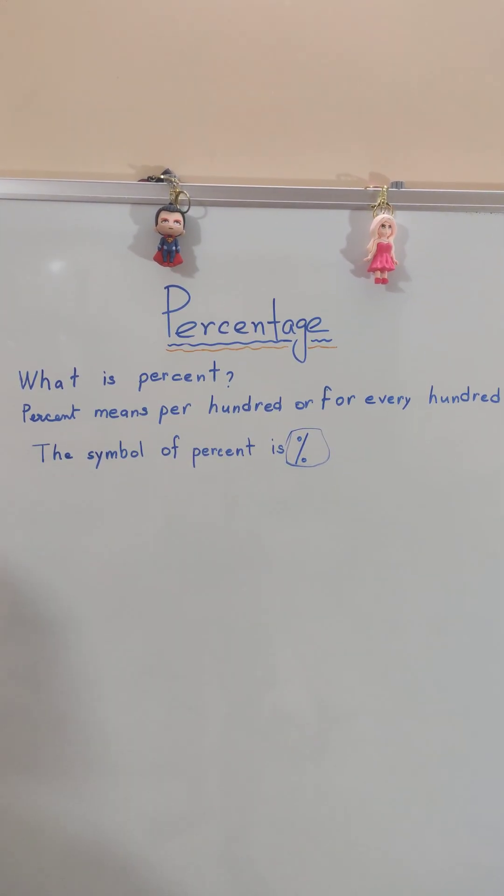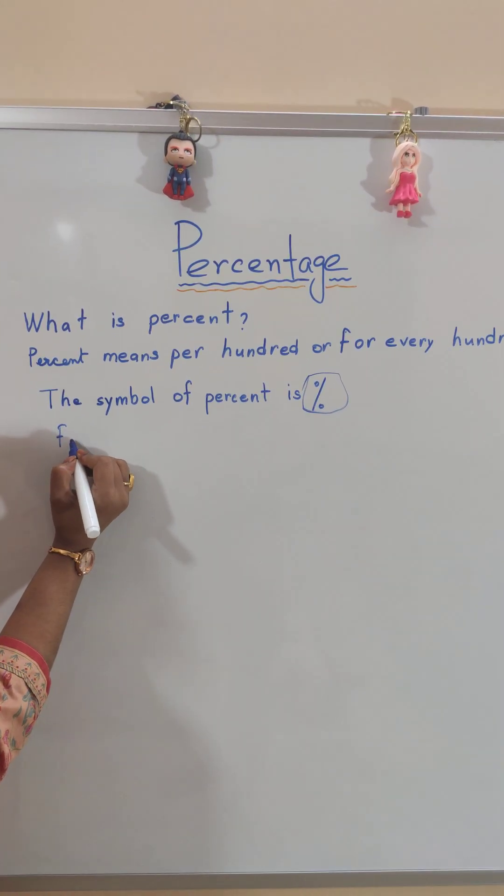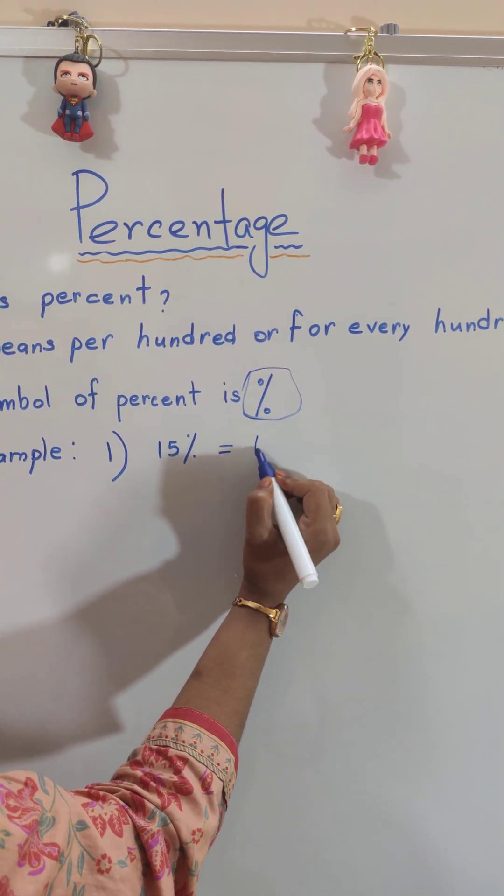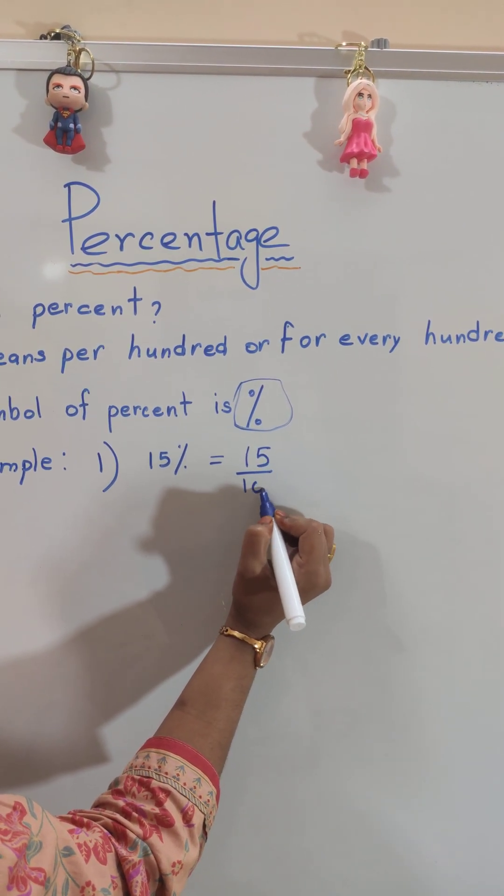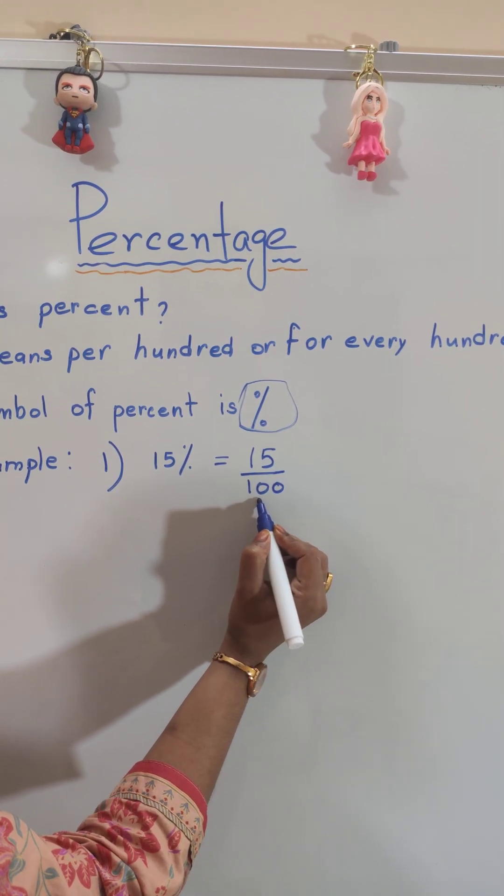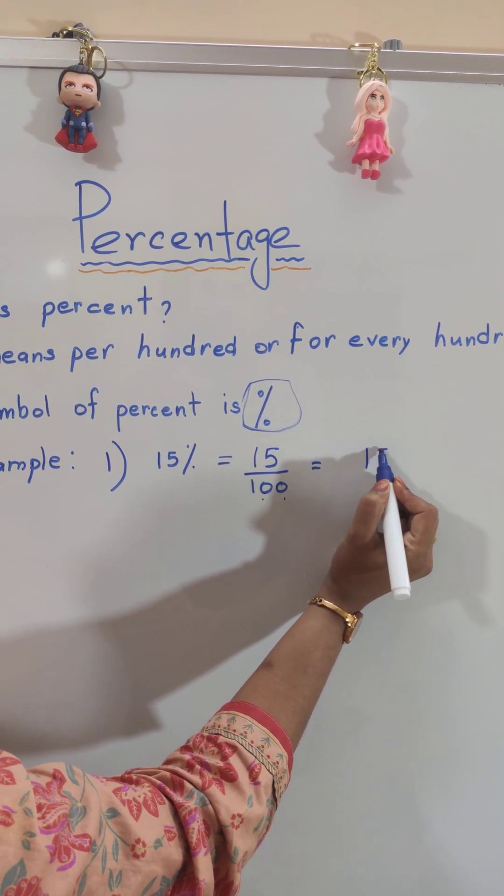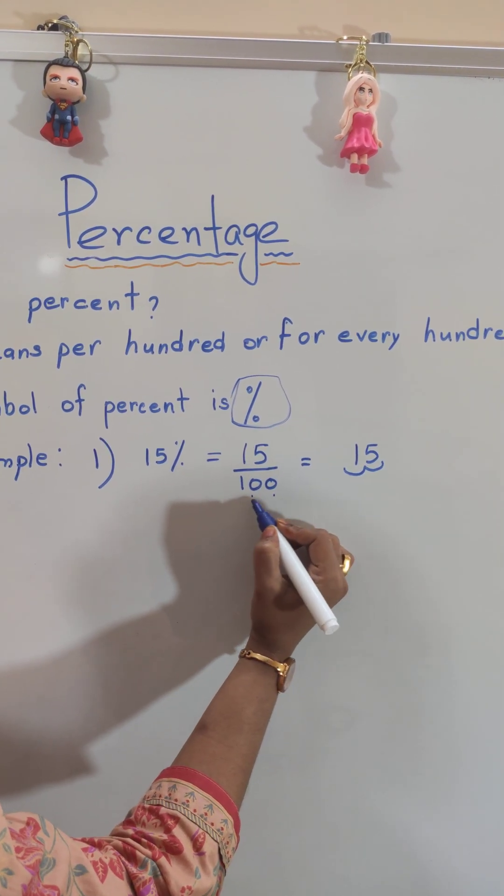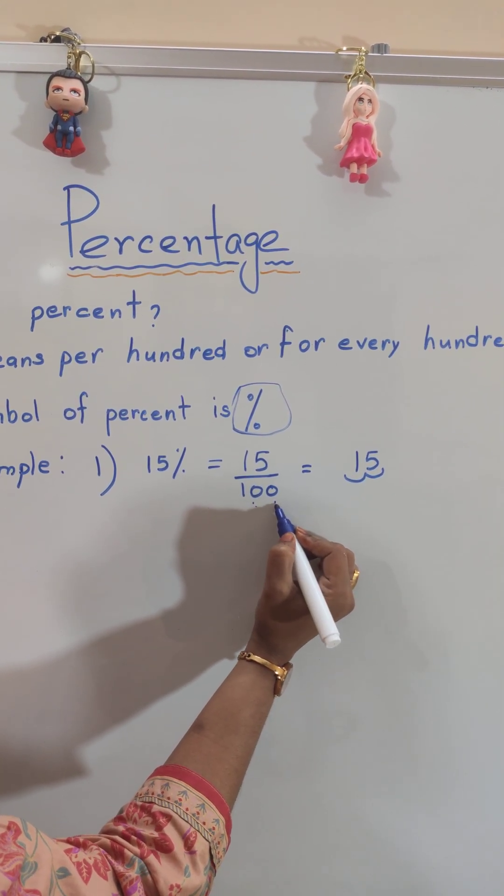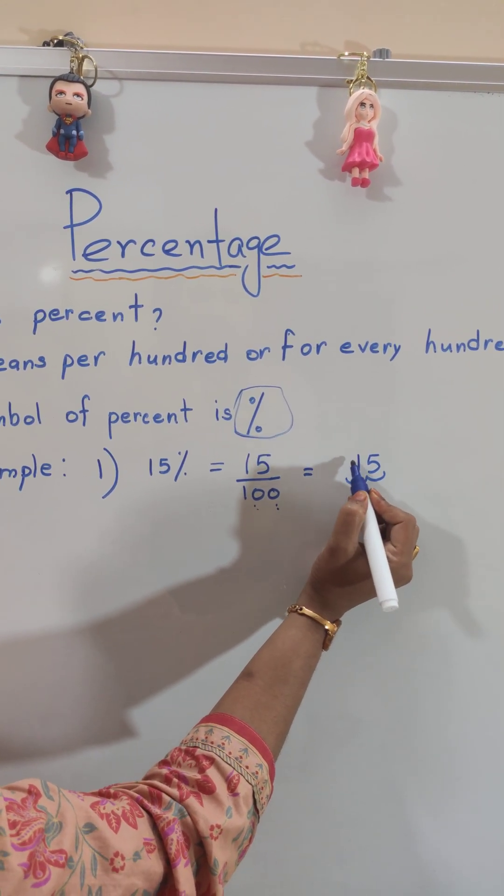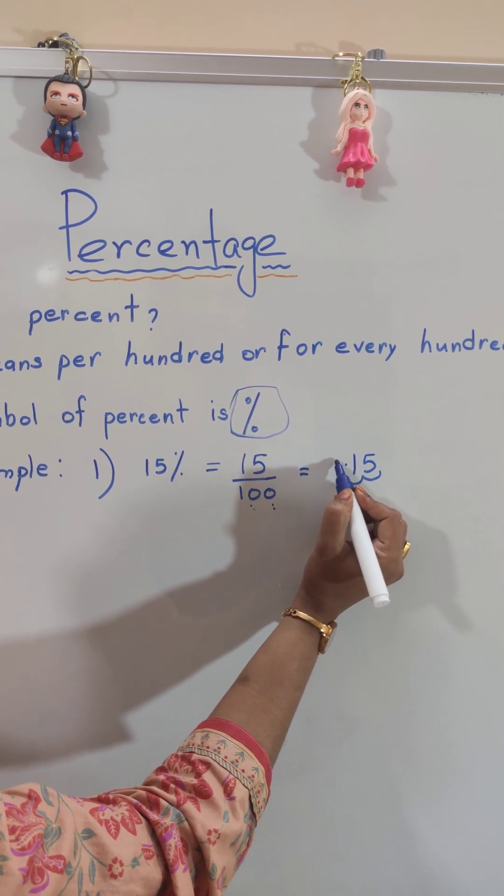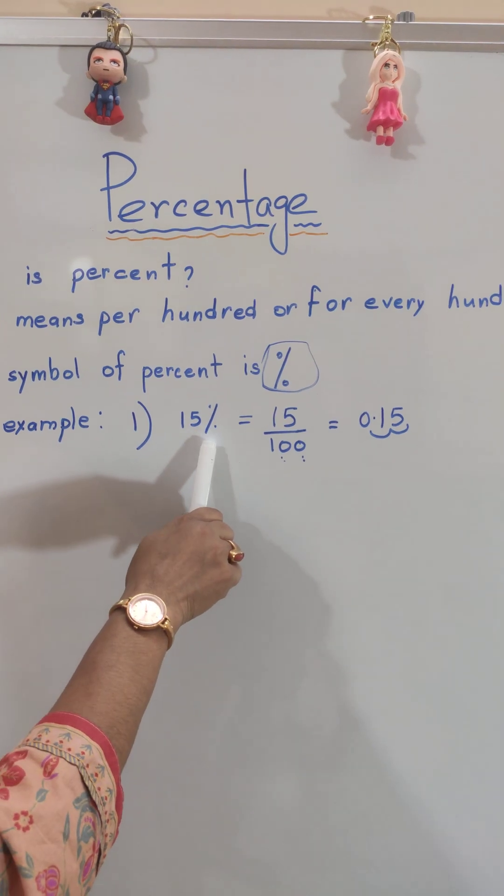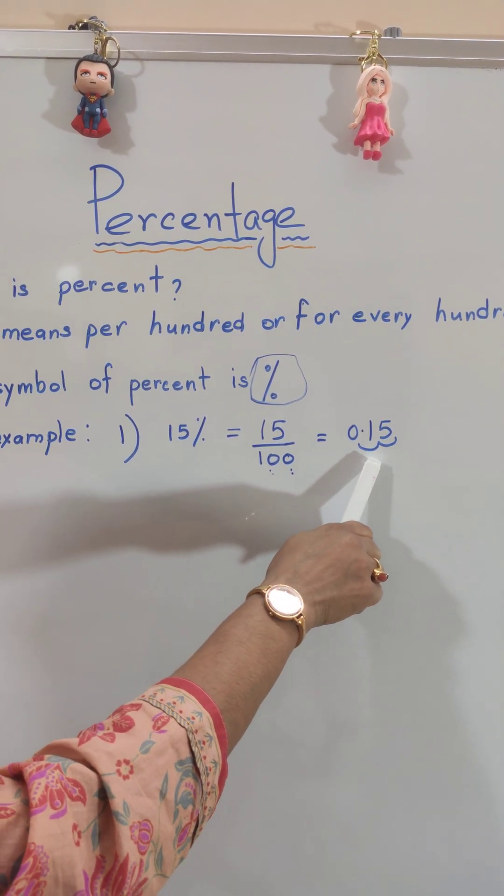Let me give you an example. 15%. We know percent means per hundred, so 15 by 100. In 100 we see two zeros, so we write 15 and move two places to the left. Because there are two zeros, we move two places to the left and give the decimal point. So 0.15. Therefore 15% means 0.15.